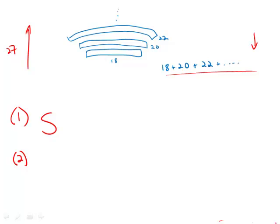Statement two tells us the number of seats in the last row is 70. So in other words, we're dealing with a sequence that looks like 18 plus 20 plus 22 plus dot dot dot plus 68 plus 70, and that's where it ends.